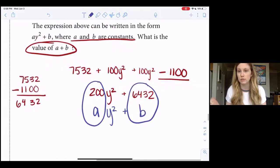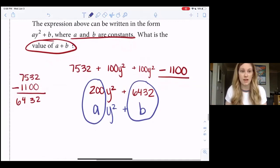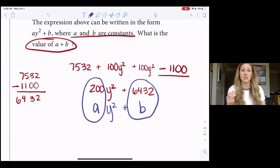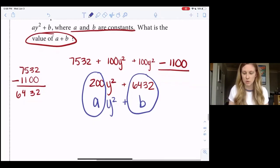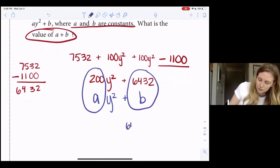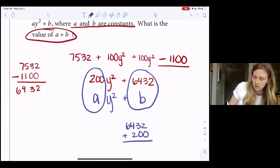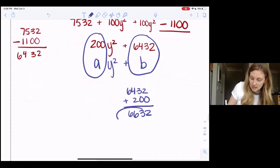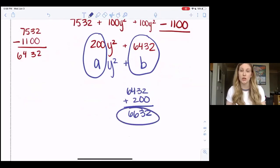And then our last step - remember they're asking us for a + b, so don't miss the last step or otherwise all of that hard work you did is just going to give you the wrong answer. So we need to add 6432 + 200. 4 plus 2 is 6, so that gives me 6632, and that is the number that you'll write in your grid in.